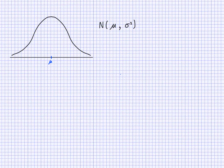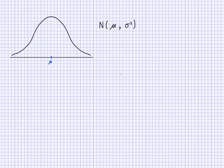With discrete outcomes we can find individual probabilities, but here because this is a continuous scale, we need to look at a section and consider the area under the curve. What we know is that if we add one standard deviation and subtract one standard deviation, 68% of the data will fall within that range.